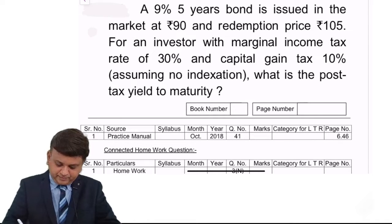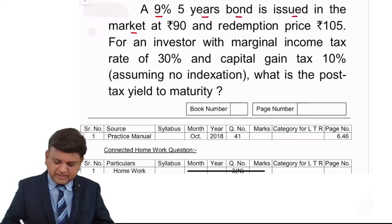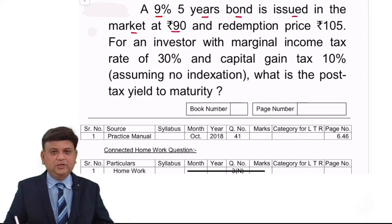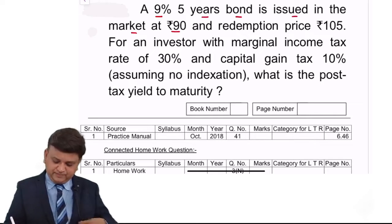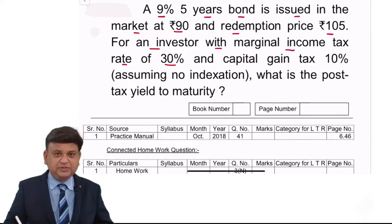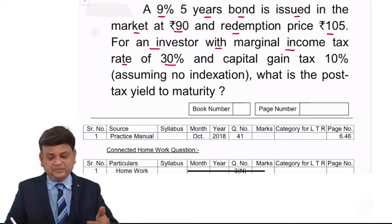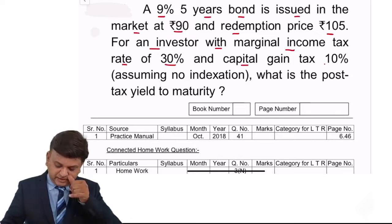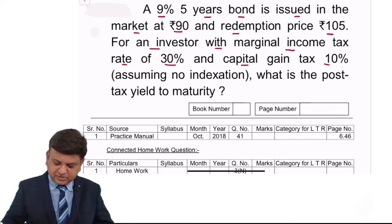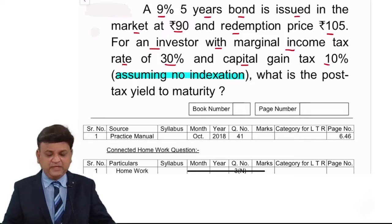Next question: A 9% 5-year bond is issued in the market at ₹90. Redemption price is ₹105. For an investor with a marginal income tax rate of 30% — meaning 30% tax has to be paid on incremental income — and capital gain tax at the rate of 10%, assuming no indexation benefit.